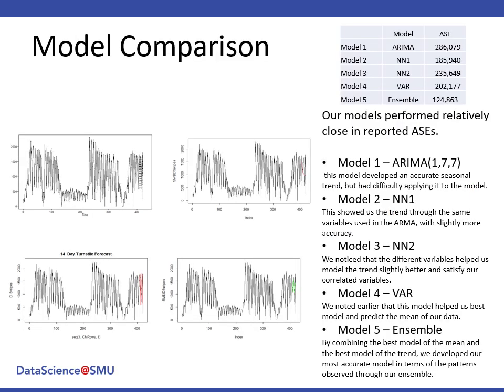Our first model developed an accurate seasonal trend, but it had difficulty applying to the model. The second model showed a trend through the same variable used in the ARIMA, but with a slightly better accuracy. And our third model, we noticed different variables helped us in the trend, slightly better satisfied our correlated variables. The VAR model helped us best in predicting the mean of our data, but was not as good as forecasting. And finally, by combining the best models, the mean and the best models of the trend, we developed our most accurate model through the ensemble.